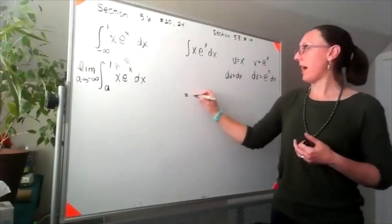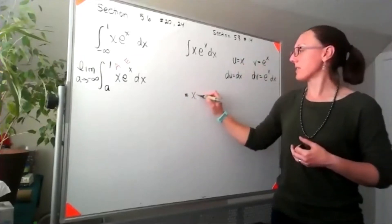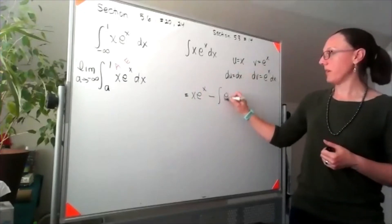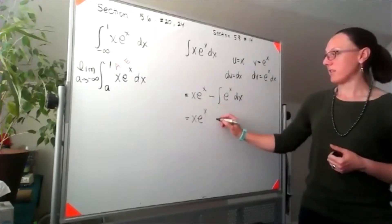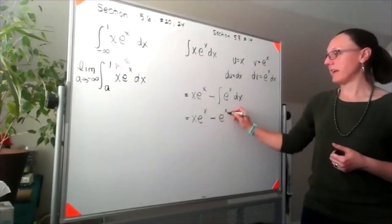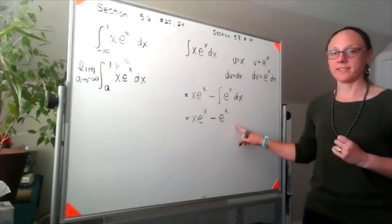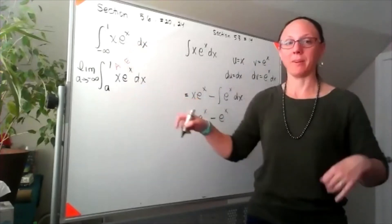Putting that together, I get x e to the x minus the integral of e to the x dx, or x e to the x minus e to the x. Normally on the indefinite integral I'd want to put a plus c here, but because I know we're actually doing a definite integral, I'm going to skip that.